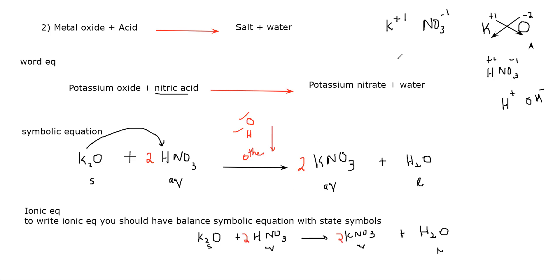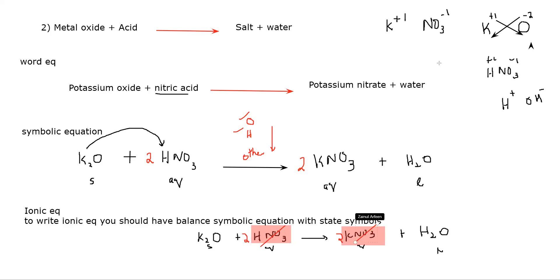To write the ionic equation, highlight the aqueous substances — HNO₃ and KNO₃ are both aqueous — and cancel out the common ions. The NO₃ ions are common on both sides, so we cancel them out. What is left is the ionic equation: K₂O + 2H⁺ → 2K⁺ + H₂O. This is the ionic equation for this reaction.